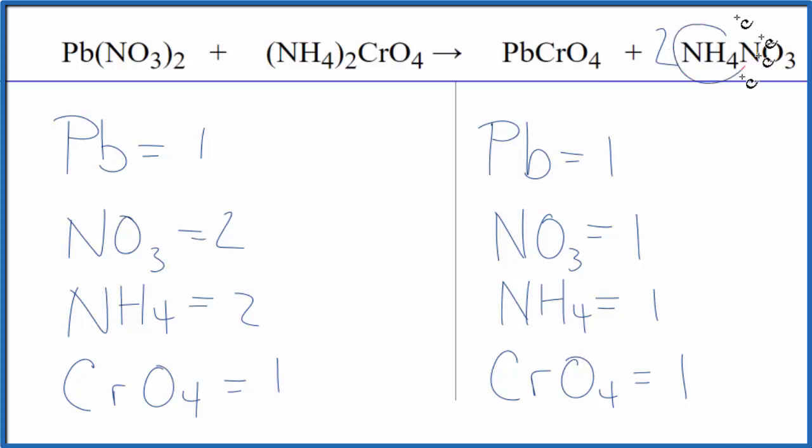Now you have your one ammonium times two, that gives us two - these are balanced. And you have your one nitrate times two, gives you two of those. You're done, this equation is balanced.